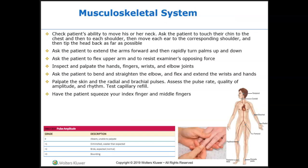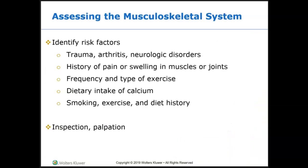Musculoskeletal assessment: assist the patient to the supine position. Peripheral vascular assessment includes measuring the BP and assessing the skin, perfusion of the extremities, and the peripheral pulses. We will inspect and assess the skin and perfusion of the extremities, and palpate peripheral pulses using the pads of the index and middle fingers to feel for amplitude and symmetry. Carefully palpate the following pulses one at a time: carotid, brachial, radial, femoral, popliteal, dorsalis pedis, and posterior tibial pulses. Make sure capillary refill is less than three seconds.